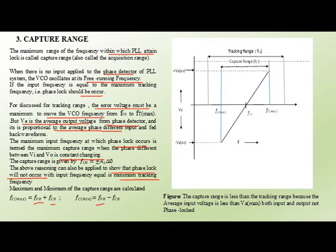The capture range is always less than the tracking range, as shown in the figure. The average input voltage is always less than the maximum, for both input and output phase lock. Therefore, both input and output phase lock conditions apply.